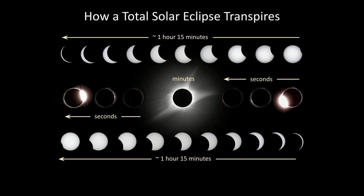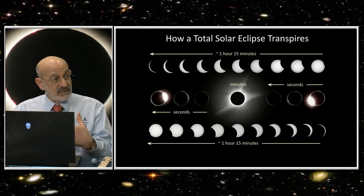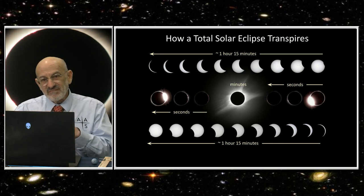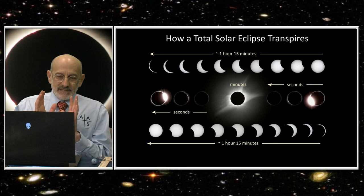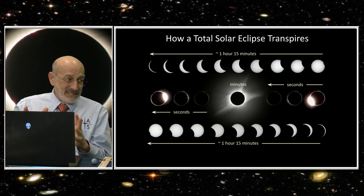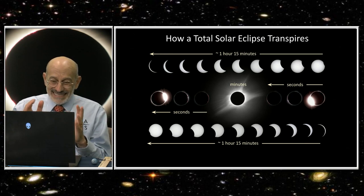It takes a little over an hour for the moon to cover the sun completely, and then you get this rush of things happening over just a matter of seconds as the moon finally covers the sun. Then you get several minutes of totality. For this eclipse in April, if you're in southwest Texas you'll get about four and a half minutes of totality. In northern New Hampshire and Maine it'll be about three and a quarter minutes.